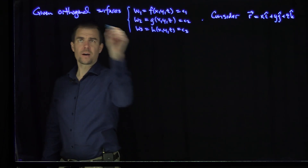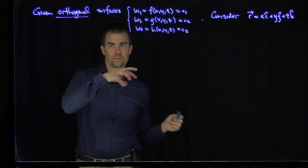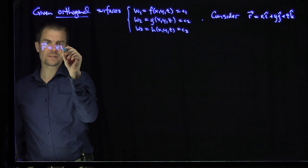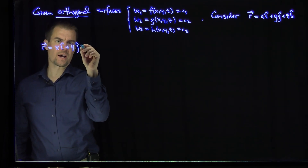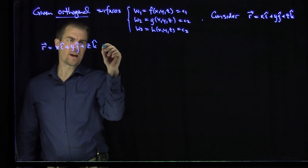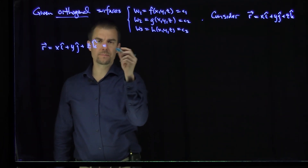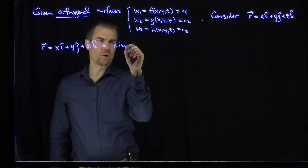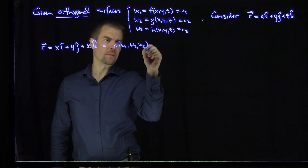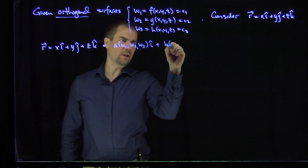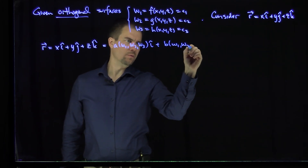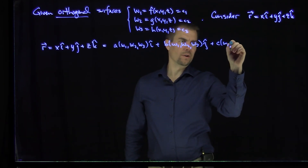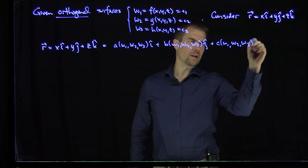If these surfaces are orthogonal surfaces, we know that the dot products of the gradients are going to be zero, and what that allows us to do is write the vector field of position r = x î + y ĵ + z k̂ as some other function: a(w1, w2, w3) î + b(w1, w2, w3) ĵ + c(w1, w2, w3) k̂.